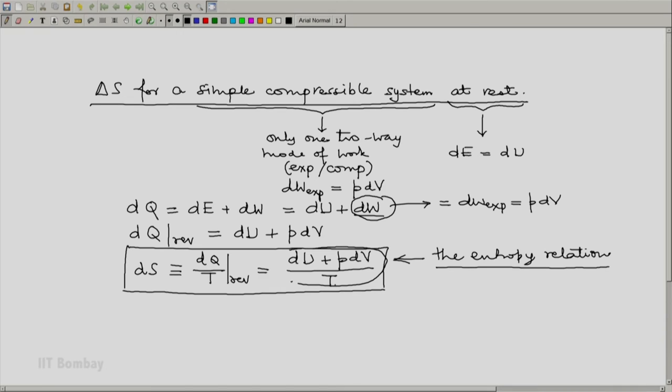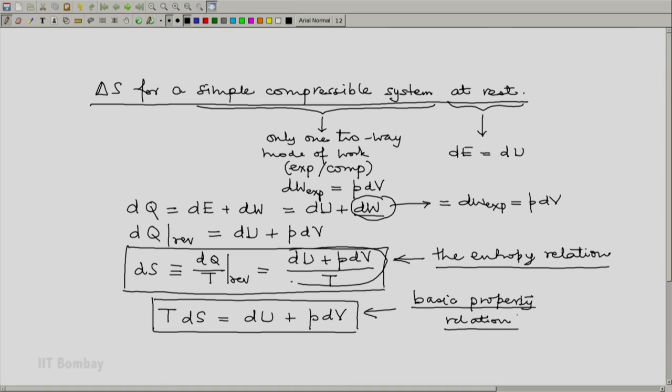If I multiply both sides of this equation by t, we will get tds is du plus pdv. This equation is known as the basic property relation, again for a simple compressible system at rest.